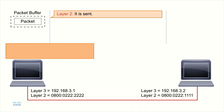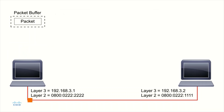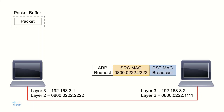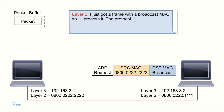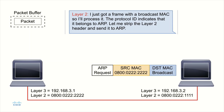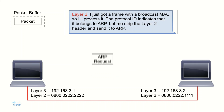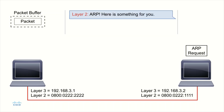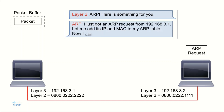That frame travels across the wire as a broadcast, and any machine on the layer two network hears it. The intended receiving device's layer two says, I just got a frame with a broadcast MAC address — I need to process it. The protocol ID says it's an ARP, so it strips off the layer two header and sends it up to the ARP application. ARP says, that is an ARP request from 192.168.3.1 — now that I know his MAC address, let me put that in my ARP table, and then I can respond.